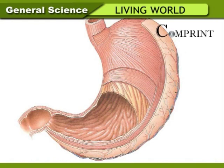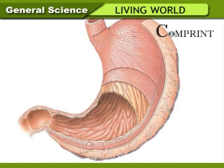Stomach. Its inner walls are folded. With the movements of the stomach muscles, these folds make the food smooth. This food is called chyme. Gastric glands are present in the walls of the stomach. They secrete gastric juice into the stomach. The gastric juice contains enzymes which act on chyme and change it into a simple form. The walls of the stomach also produce acid, which kills bacteria present in the food.